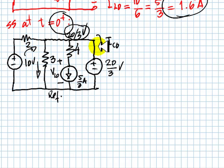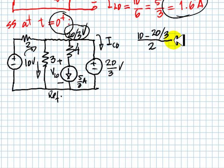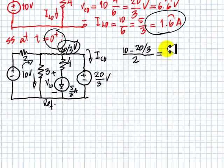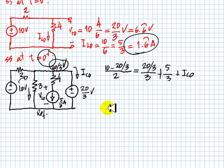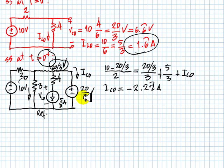We write a KCL equation for the top node, with currents going in. That is: 10 minus 20 thirds, divided by 2, equals 20 thirds over 3, plus the current in the inductor branch which is 5 thirds, plus the current in the capacitor which we do not know. Solving for Ic0, we obtain negative 2.22 periodic amps — that is the current in the capacitor.